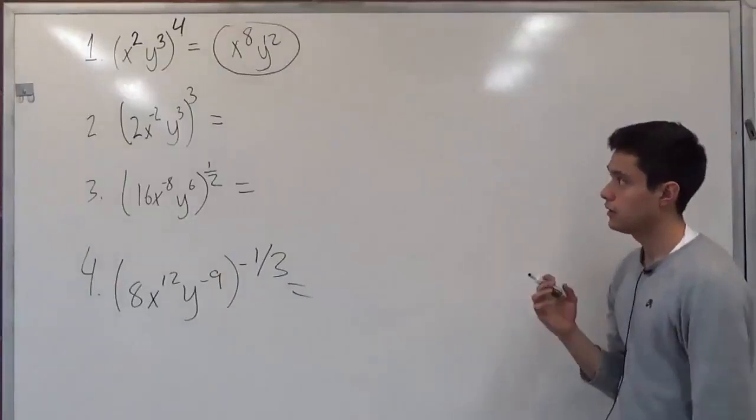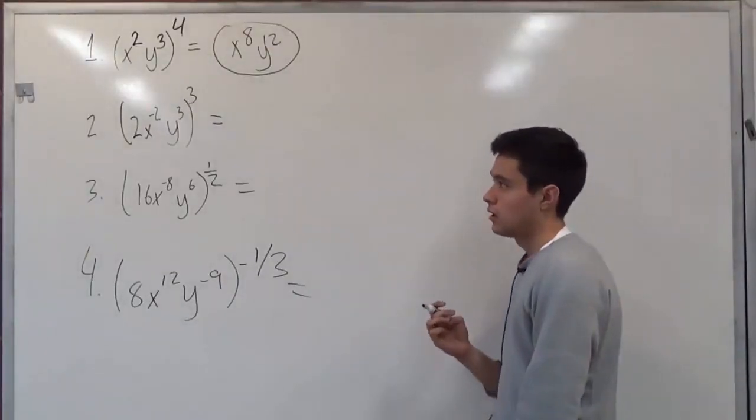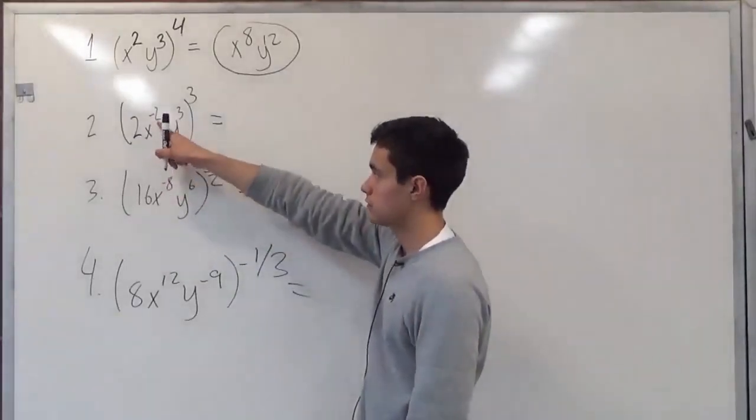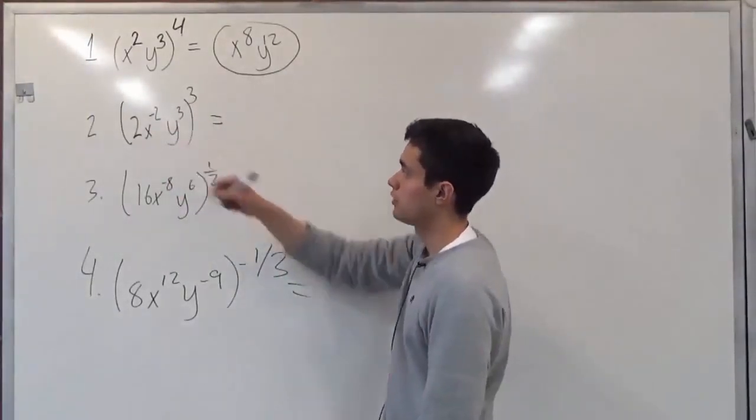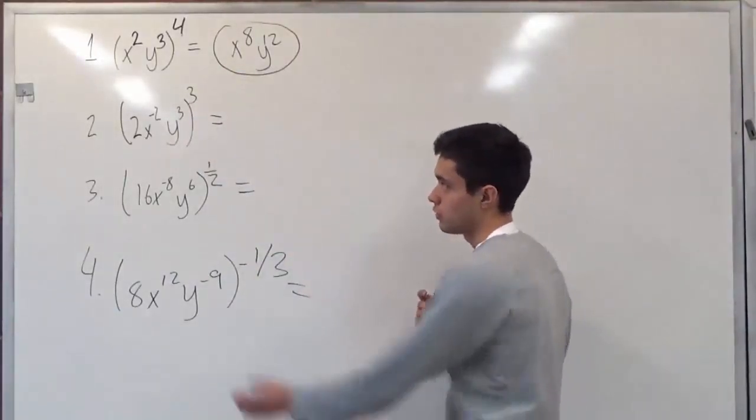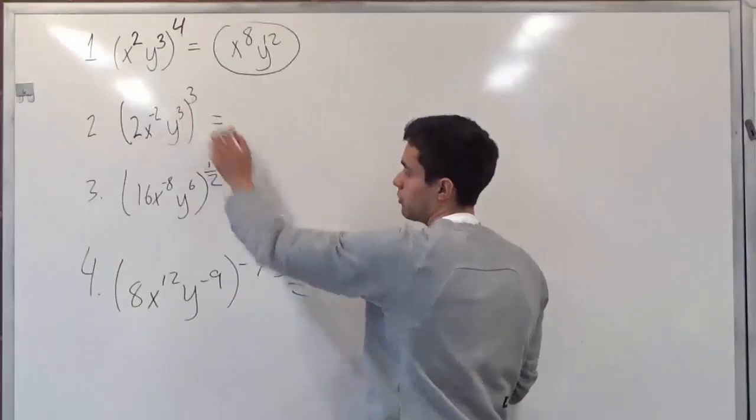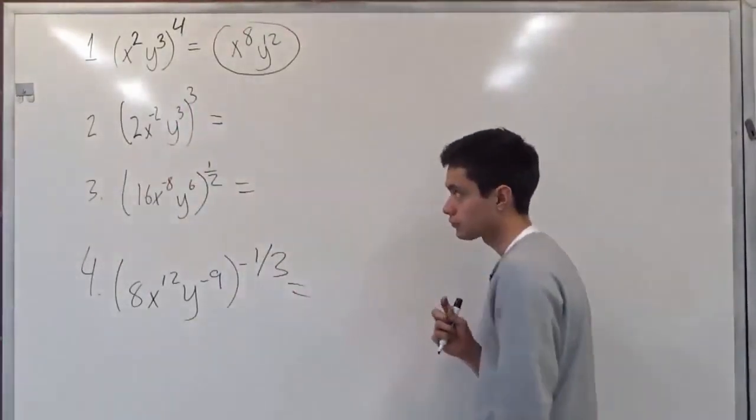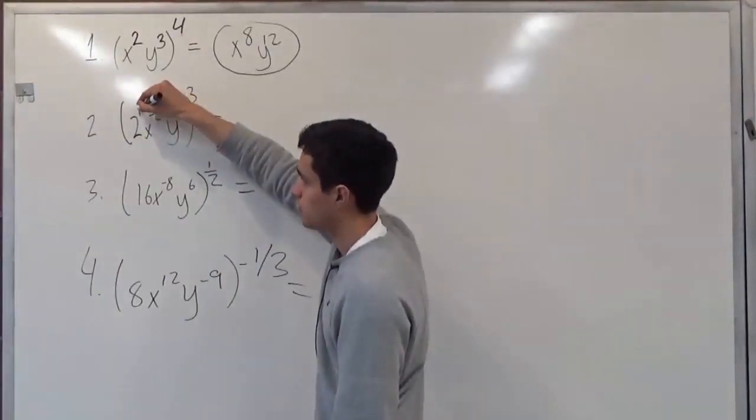So as we move on to the second one, we understand that it says 2x to the negative 2 times y to the third to the third power. So this whole will be to the third power. But this one has a leading coefficient. So let's pretend this one has a base power of 1.